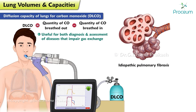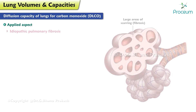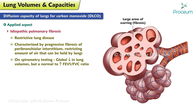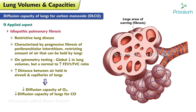Applied aspect: idiopathic pulmonary fibrosis is a restrictive lung disease characterized by the progressive fibrosis of the peribronchiolar interstitium, restricting the amount of air that can be held by the lungs. On spirometry testing, this will be seen as a global reduction in lung volumes but a normal to increased FEV1/FVC ratio. These fibrotic changes also increase the distance between the air held in the alveoli and the capillaries of the lungs, which reduces the patient's diffusion capacity of oxygen, seen as a decreased DLCO.